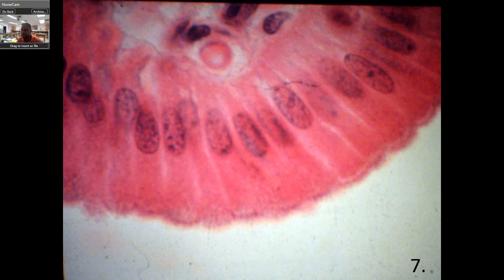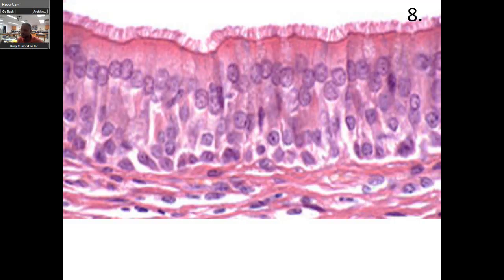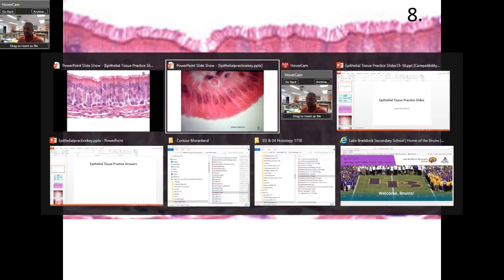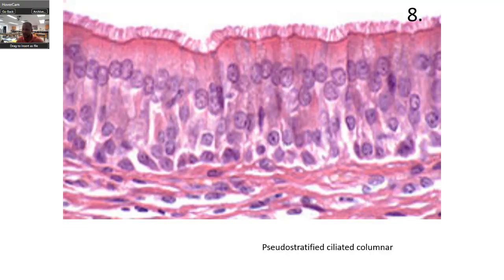Take a guess — pseudostratified. This is interesting because this is a whole row of cells. Look at the nuclei — they're in different locations, giving the illusion of a stratified layer, but from here down to here is one layer. This is right underneath — this is the basement membrane. Here's your apical surface, there's your lumen.